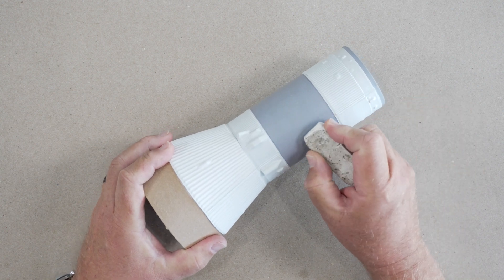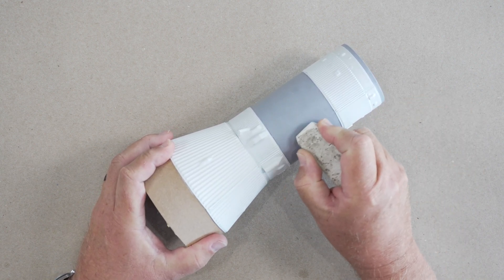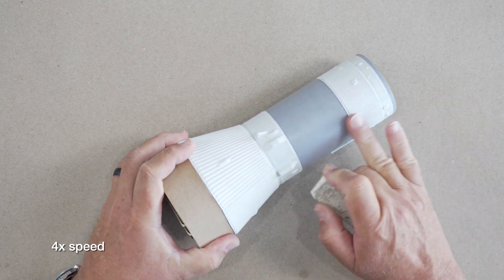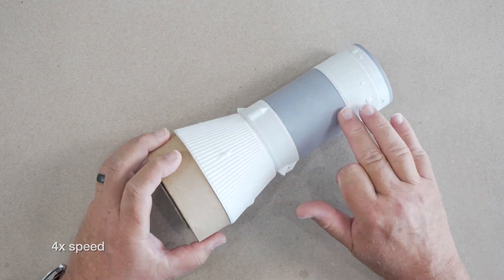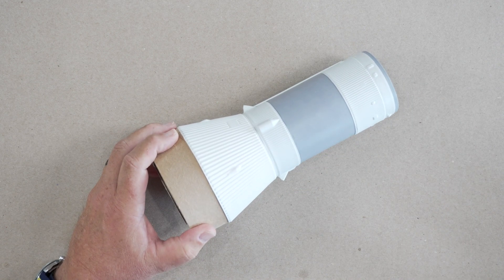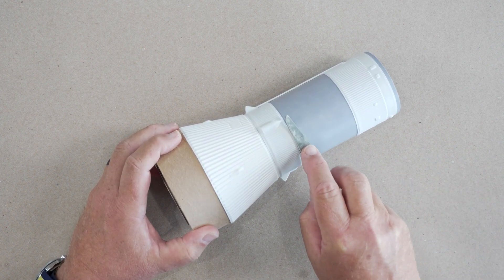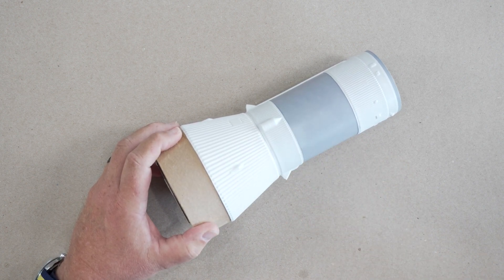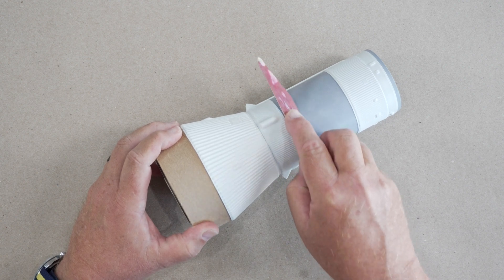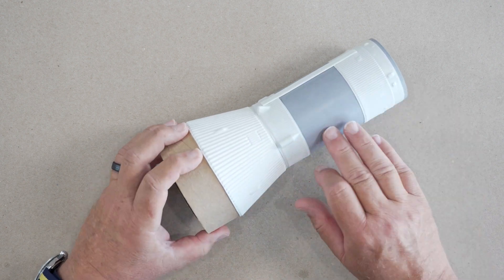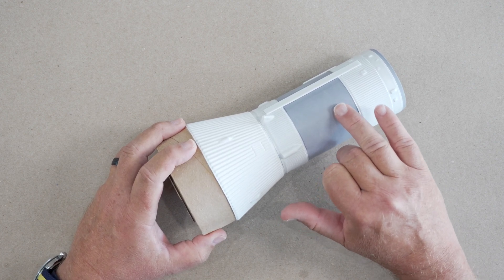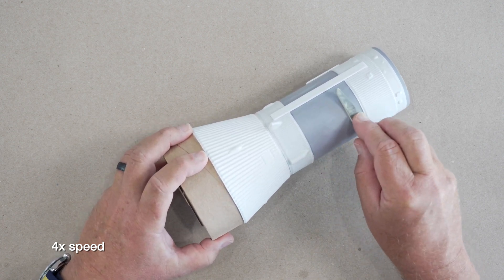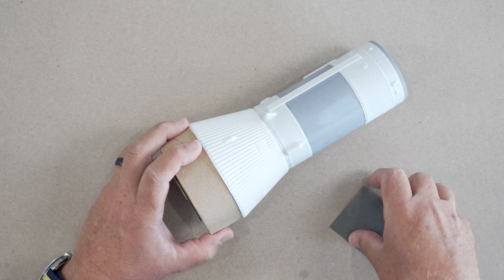You can use a common eraser to get rid of the pencil lines. There's a little hickey right here. I'm going to use a couple sanding sticks to smooth that out. This is a fine sanding stick. I'm going to go to an ultra-fine sanding stick now. There's something right there. That might be some glue right there. I'm going to bring in some thousand grit paper here.